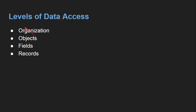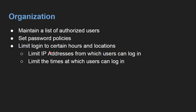These are the levels of data access: organization, object, field, and records. For organization level security there are three points: first, maintain a list of authorized users; second, set password policies; third, limit login to certain hours and locations — specifically, limit the IP addresses from which users can log in and limit the times at which users can log in. These things you can control through organizational level security.